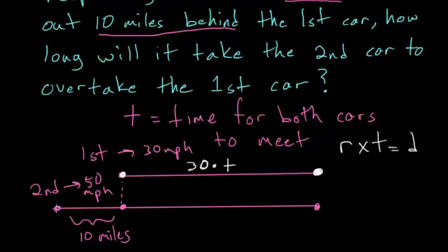Once the second car travels from its starting point to the starting point of the first car, this 10 miles here, then it's just going to cover the exact same distance as that of the first car, which we have already figured out is just 30 times t. So the total distance the second car travels is this 10 miles here plus this 30 times t.